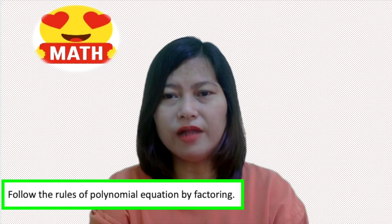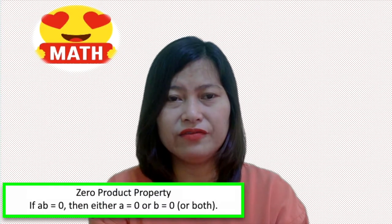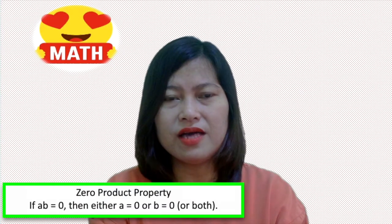To help you figure it out, draw a picture or a diagram. Number two, follow the rules of polynomial equations by factoring. This means that you need to place all polynomials on one side of the equation and set it equal to zero, following the zero product property. The zero product property states that if ab equals zero, then